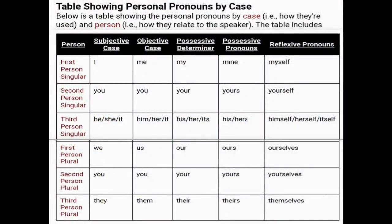Here is a table showing personal pronouns by case and person — how they relate to a speaker and are used in a sentence. The table includes person, subjective case, objective case, possessive determiner, possessive pronouns, and reflexive pronouns. First person singular: I, me, my, mine, myself. Second person singular: you, you, your, yours, yourself. Third person singular: he/she/it, him/her/it, his/her/its, his/hers, and himself/herself/itself. First person plural: we, us, our, ours, ourselves. Second person plural: you, you, your, yours, yourselves. Third person plural: they, them, their, theirs, themselves.